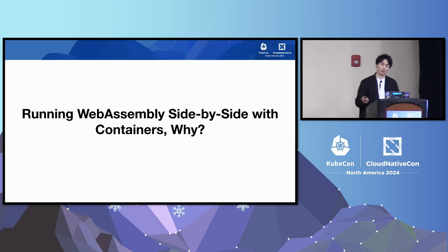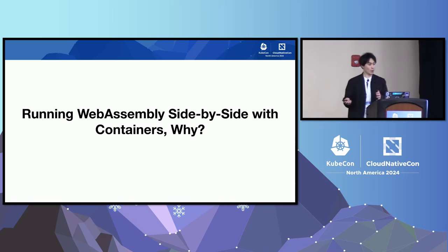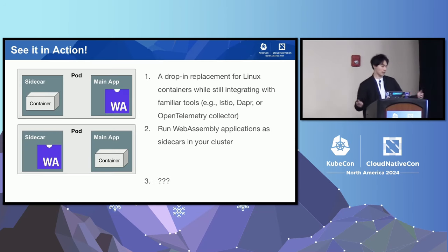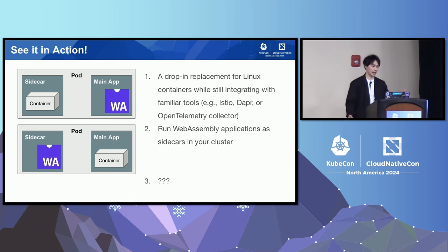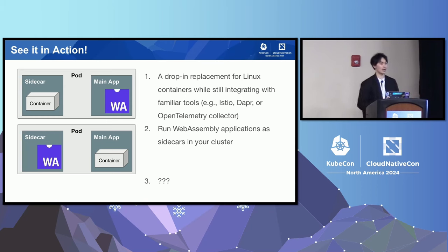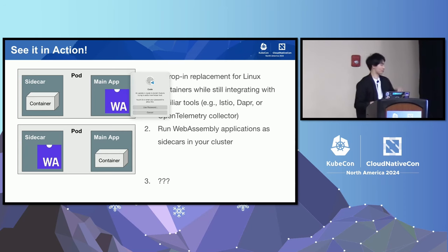Why do we want to run WebAssembly side-by-side with containers? This is a case study comparing how container and WebAssembly interact. Two scenarios: first, replace a heavyweight sidecar with WebAssembly while still using Linux containers for logging and OpenTelemetry. Second, where you have a heavyweight Linux container you can't fully compile to Wasm due to language toolchain issues, carve out some features from the Linux container, compile that portion to Wasm, and run it as a sidecar in the same pod.